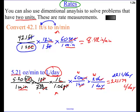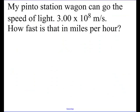So I want you to try that right now. Here's a pinto station wagon I had in college. Fast, fast car. Could go the speed of light, which is 3.0 times 10 to the 8th meters per second. Well, how fast is that in miles per hour? So take a moment and do that problem and see what you get.